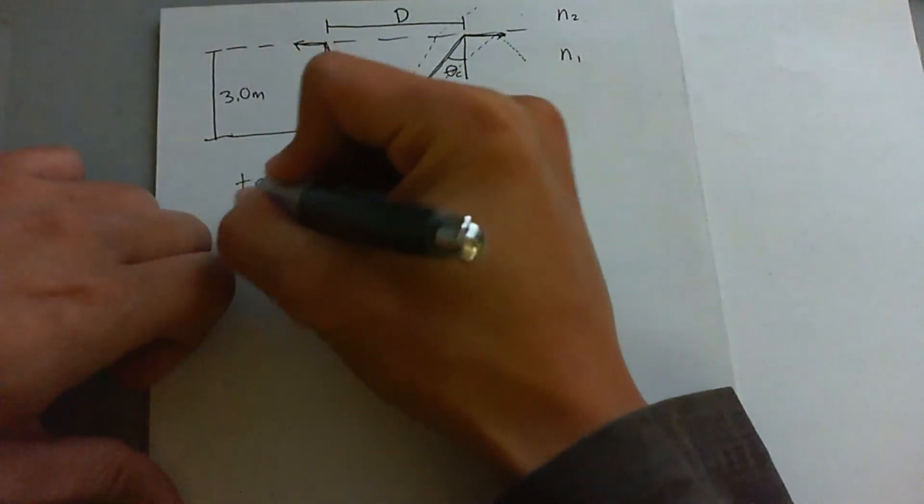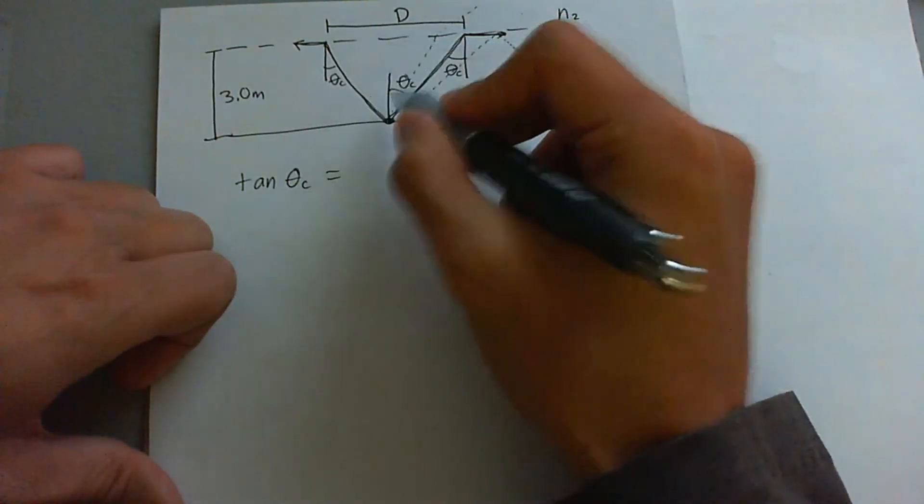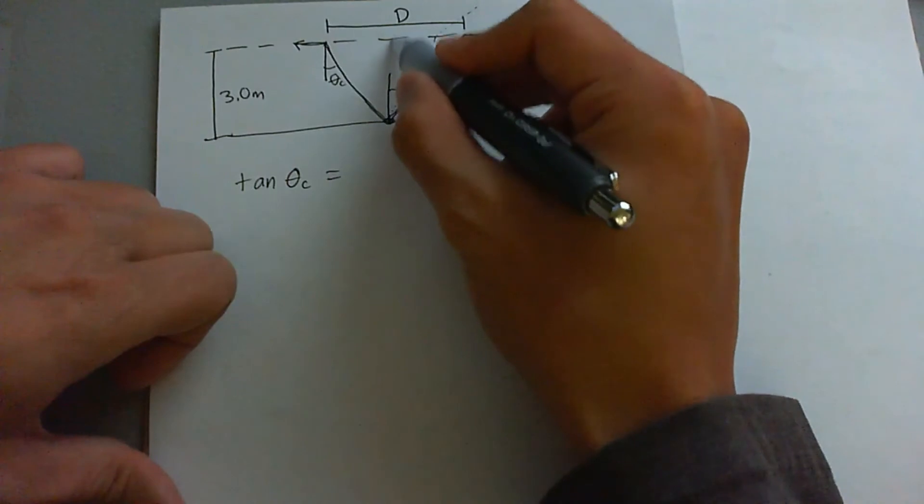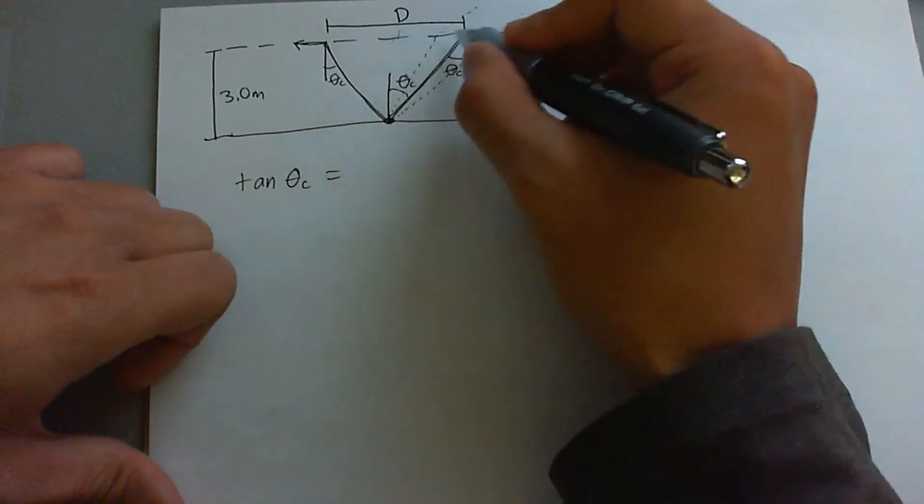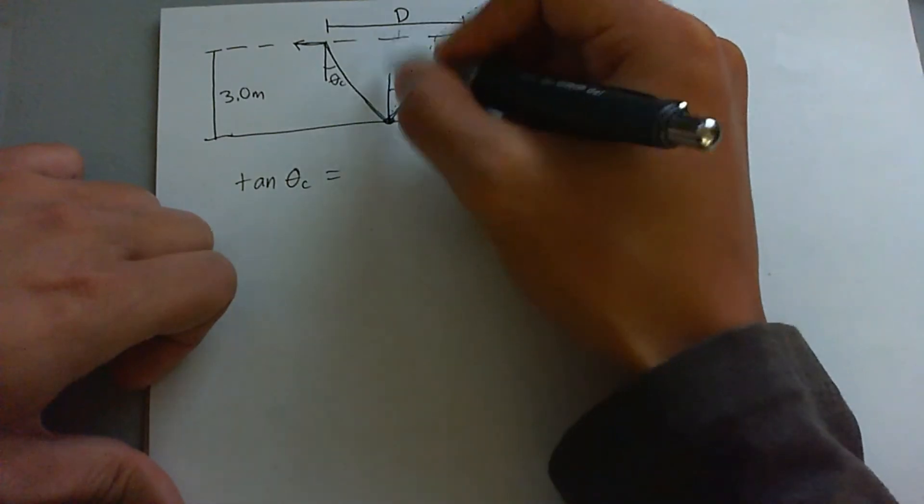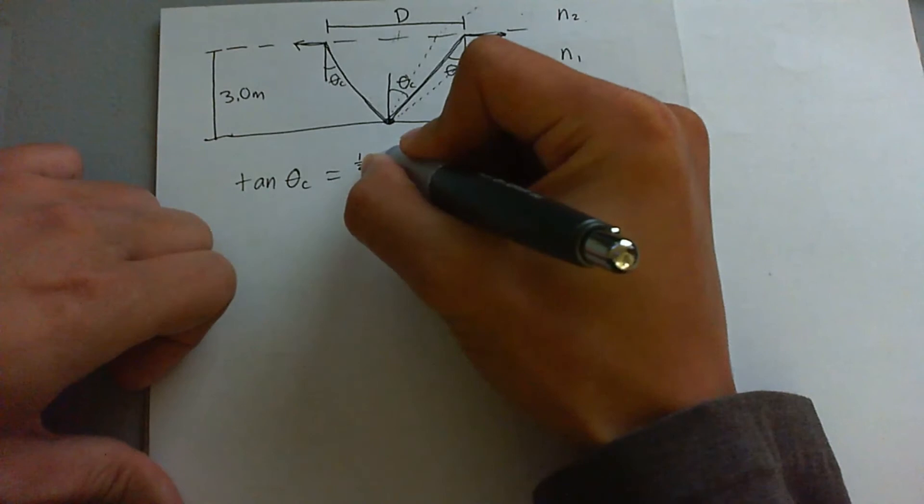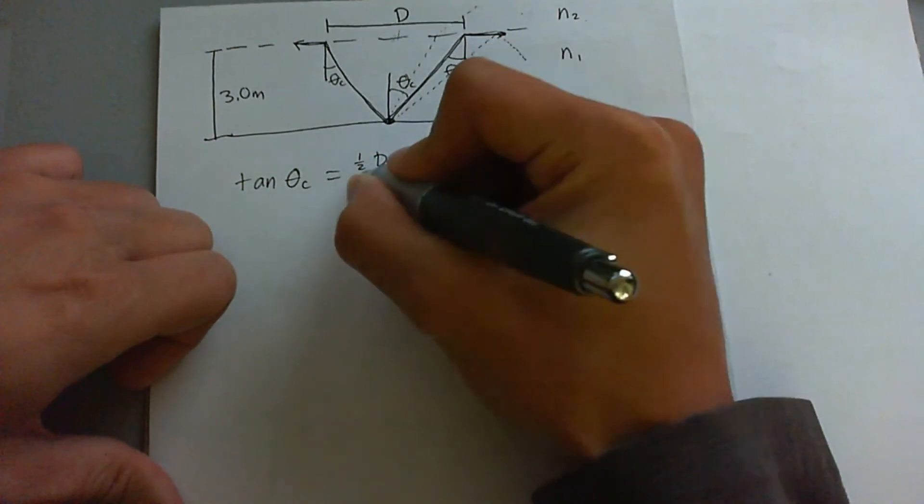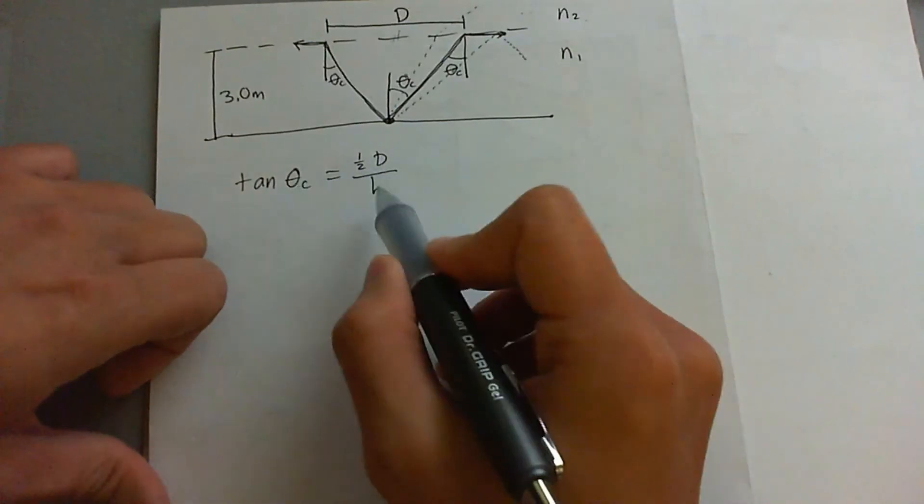Let's go ahead and find D in terms of critical angle theta sub C. Tangent of that critical angle equals opposite over adjacent. The opposite in this right triangle scenario is going to be half of that D that we want to find. The adjacent is going to be the height, which we'll call H. So tan theta C equals one-half D divided by H. Now we can solve for D in terms of H, which we know already,